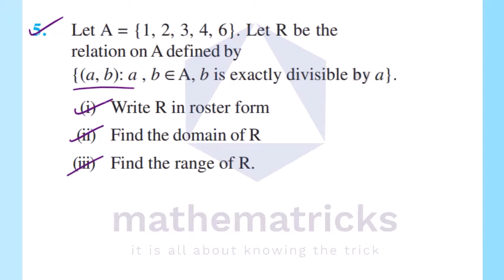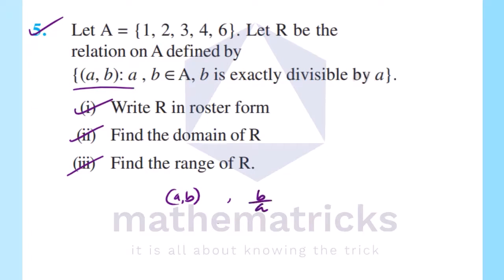Now the relation is defined by set builder formula. The relation is defined by the set of all (a, b) belonging to A, where b is equally divisible by a — that is, ordered pairs where B is divisible by A with zero remainder. Then b divided by a leaves no remainder. This is what the relation means.